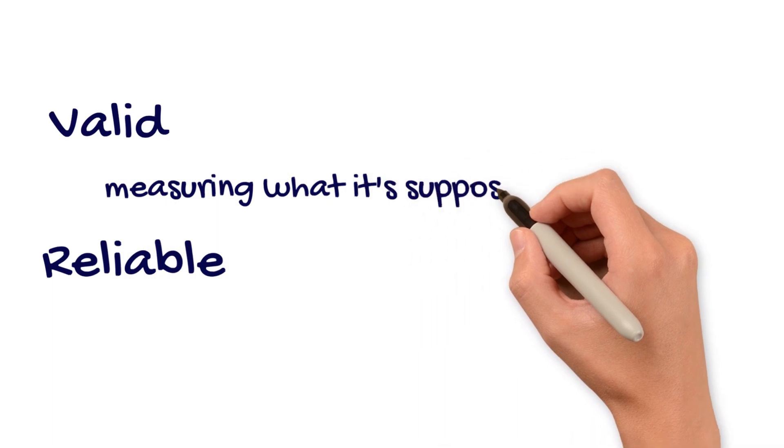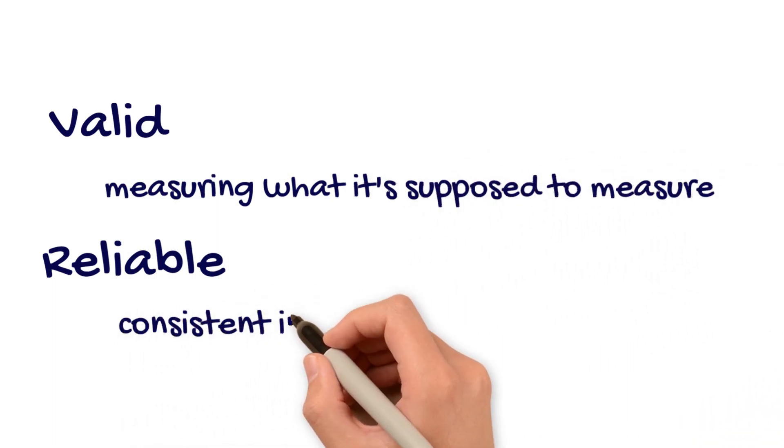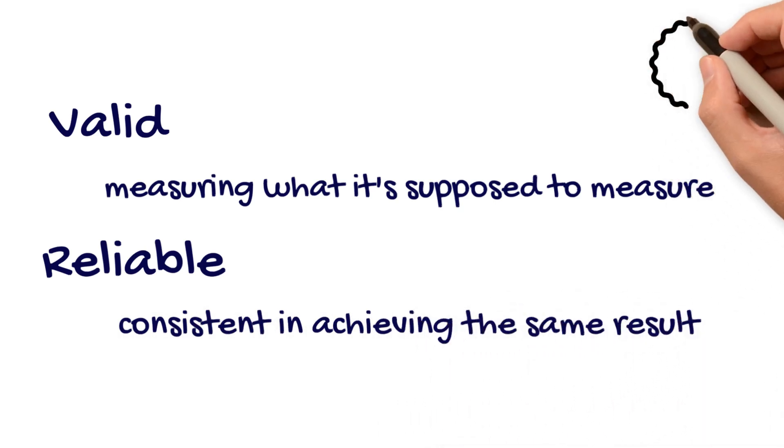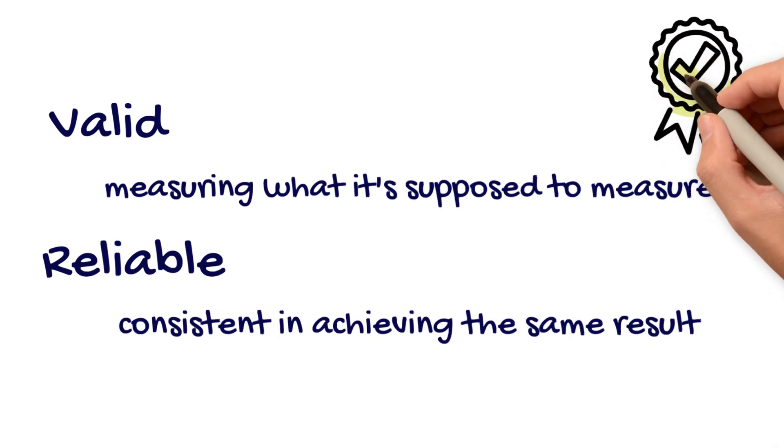Valid means that the outcome measure is actually measuring what it's supposed to be measuring. Reliable means that the outcome measure can be used over and over consistently, achieving the same result. When researchers use outcome measures that are valid and reliable, we can trust that the results reported reflect actual changes in the outcome and not errors in measurement.